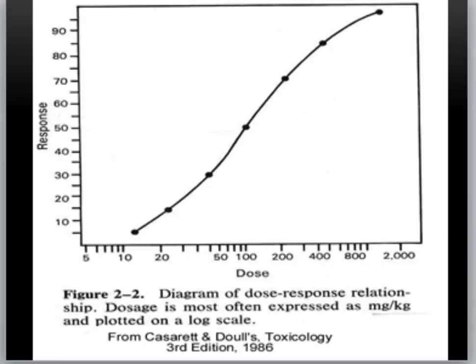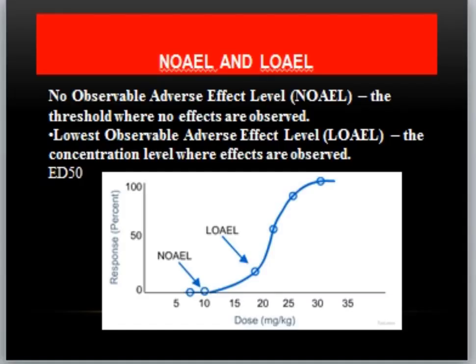We will study the dose-response graph. In the normal graph, the dose increases on the x-axis and the response increases on the y-axis. As dose increases, the normal dose-response curve increases. It is plotted on a log scale. We have two key parameters: NOAEL (No Observable Adverse Effect Level) and LOAEL (Lowest Observable Adverse Effect Level).